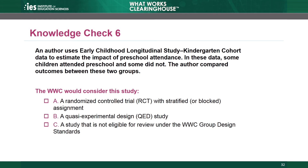Knowledge Check 6. An author uses early childhood longitudinal study kindergarten cohort data to estimate the impact of preschool attendance. In these data, some children attended preschool and some did not. The author compared outcomes between these two groups. The WWC would consider this study A: a randomized controlled trial with stratified or blocked assignment, B: a quasi-experimental design study, or C: a study design not eligible for review. The answer is B — it's a QED. The two groups are not the result of random assignment; the study authors compared two distinct, naturally occurring groups — children who did and did not attend preschool. Choice A is incorrect because the study did not use random assignment. Choice C is incorrect because the study design has a distinct comparison group.